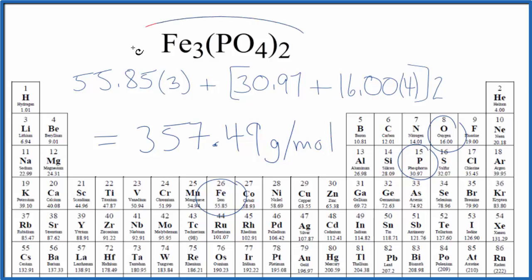So if we have one mole of iron(II) phosphate, it's going to have a mass of 357.49 grams.